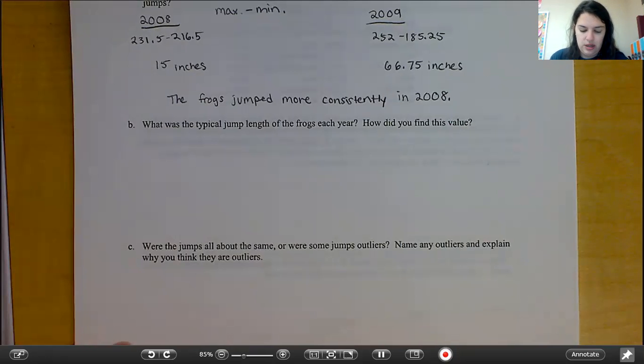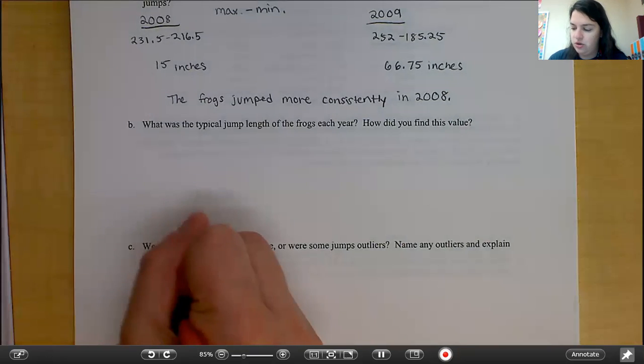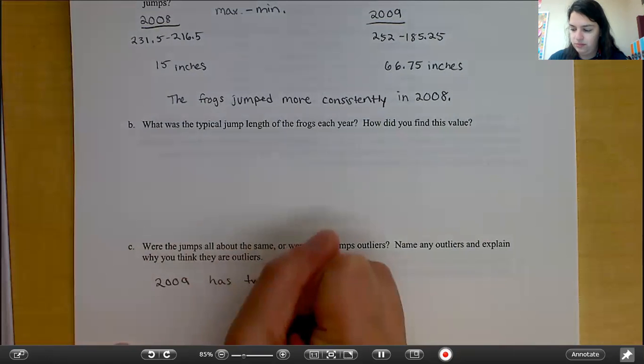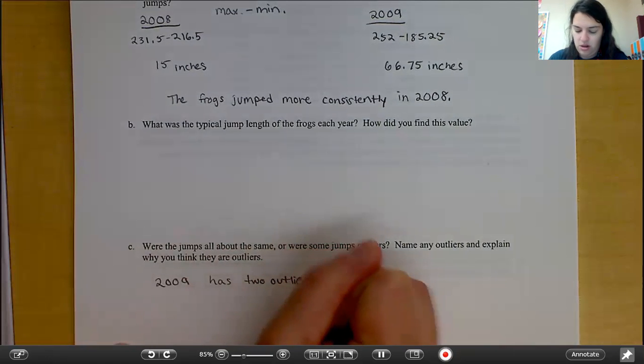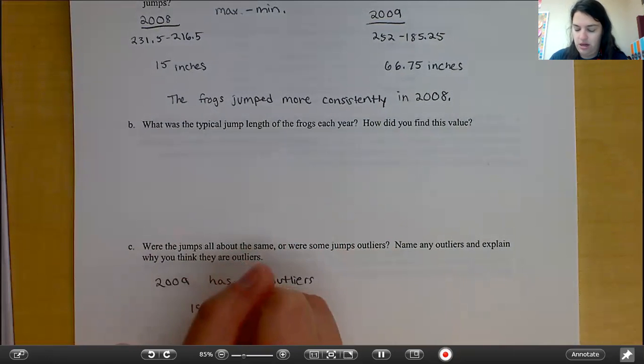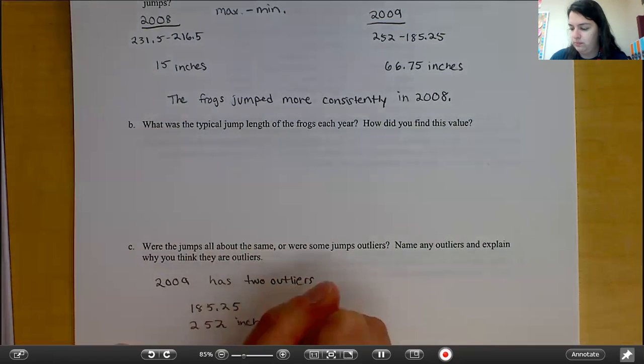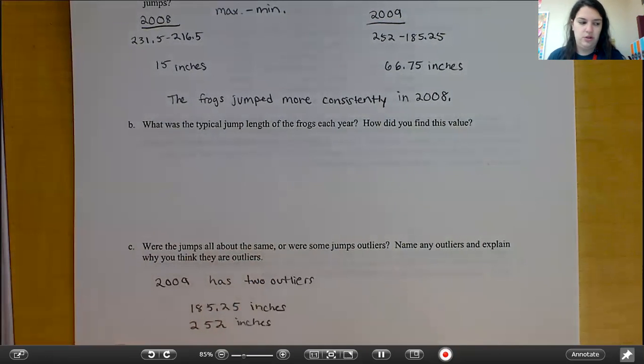Hopefully, you saw that 2009 has two outliers. They are 185.25 and 252 inches. Those are our two outliers.